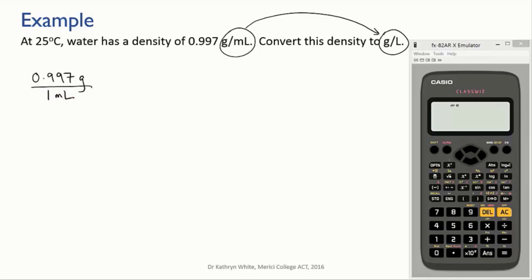First, we need to write the value that we know as a fraction along with its unit. Here, the compound unit is grams per milliliter. 'Per' means divided by, so grams per milliliter is more properly written as a fraction. We'll put the value at the top and the compound unit next to it, with grams on top and milliliters underneath.